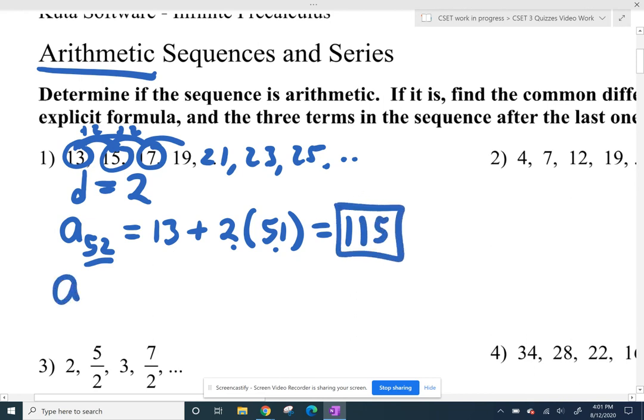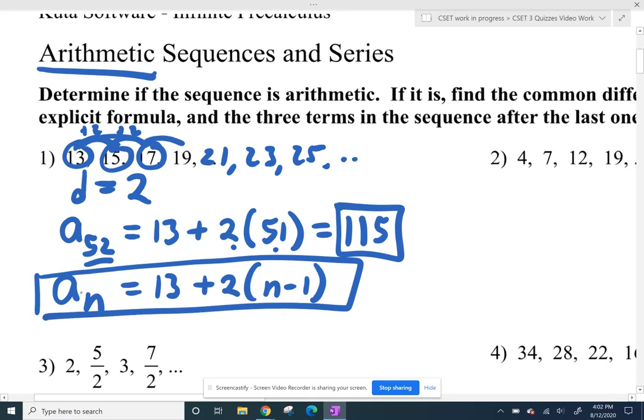If we want an explicit formula, we can get any term we want by starting off with the first term and adding that common difference n minus one times. And so that's our explicit formula for the sequence. If you'd like, you can distribute the two and just collect like terms and get this linear equation.